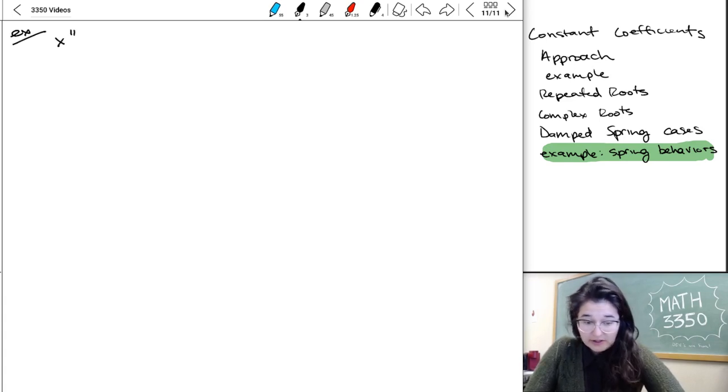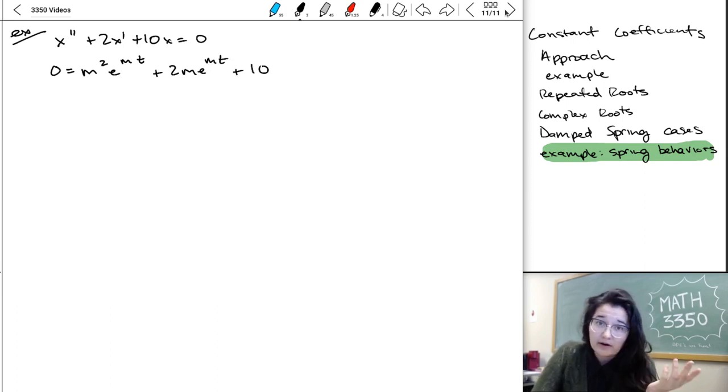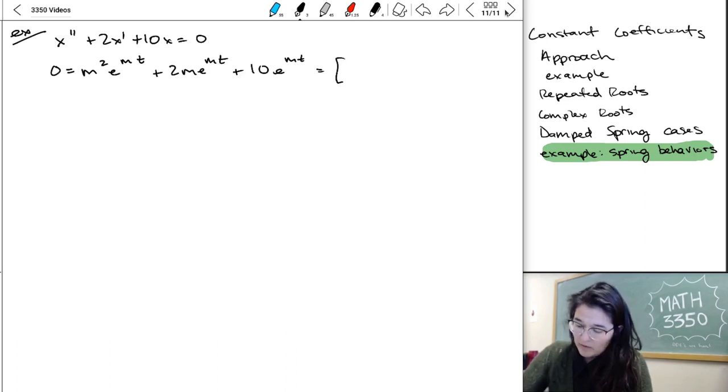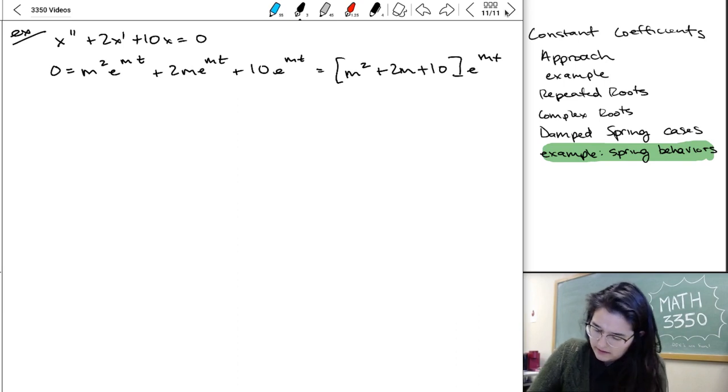So if we consider the differential equation x double prime plus 2x prime plus 10x equal to zero. Just to get through this kind of quickly for you all, I'm not going to write out the y, y prime, y double prime, because they're the same for all three of these cases. But I know that you're doing it, and you will continue to do that in the problems you work on where things actually change. So we're going to get m squared e to mt plus 2 times the first derivative m e to mt, plus 10 times our assumed solution e to mt. When we factor out the e, we get m squared plus 2m plus 10 e to mt.